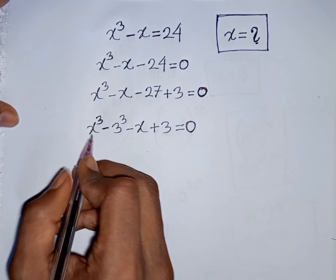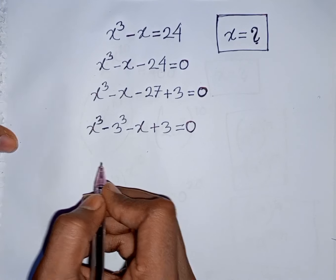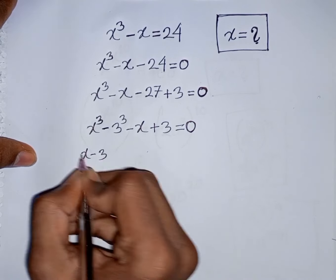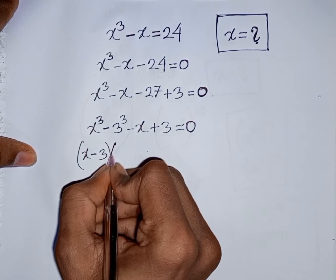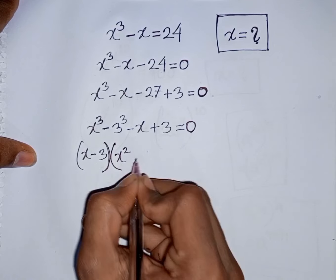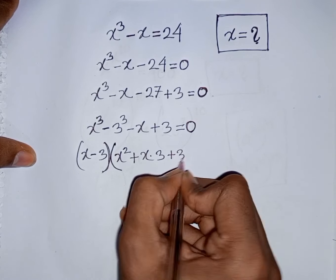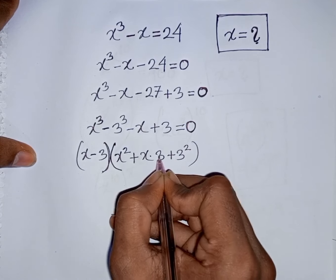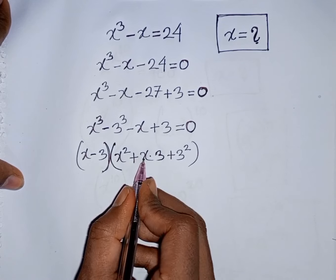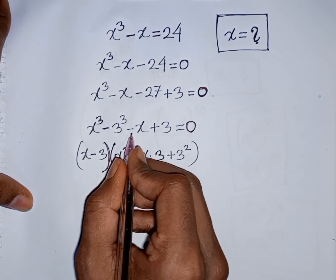Here you can apply the formula of a cube minus b cube, where a is x and b is 3. According to the formula, you can write x minus 3 times x square plus x times 3 plus 3 square. That means a minus b times a square plus ab plus b square. This is the formula of a cube minus b cube.